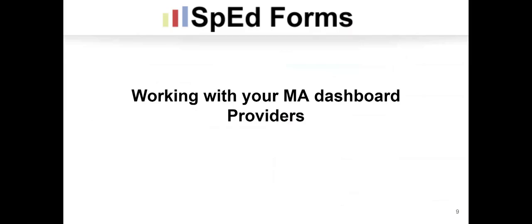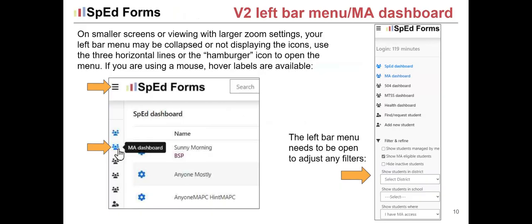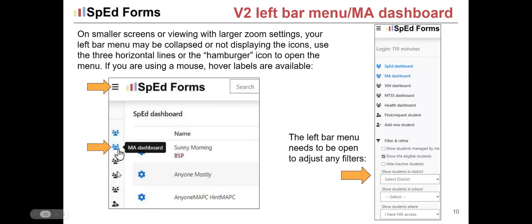Now we're going to look at working with your MA dashboard. The left bar menu has those three horizontal lines at the top — the hamburger icon. The left bar menu will have labels; if it's collapsed, you can hover over them with a mouse. On a tablet you can't hover, so you'll have to click the hamburger icon to open or expand the menu, or just click the icon for the MA dashboard.